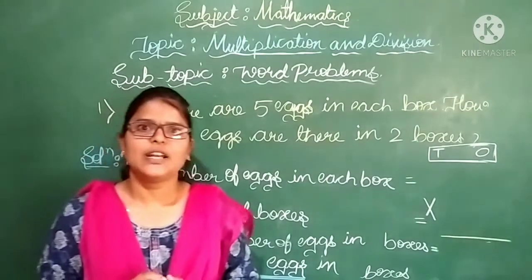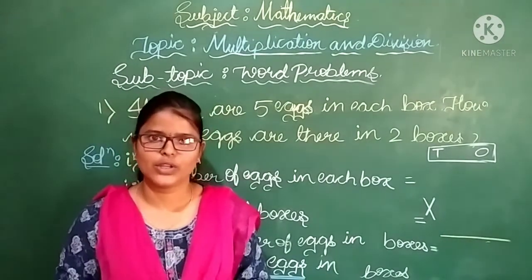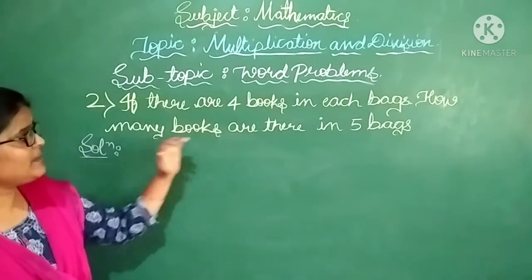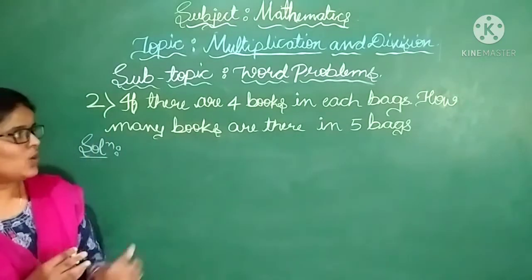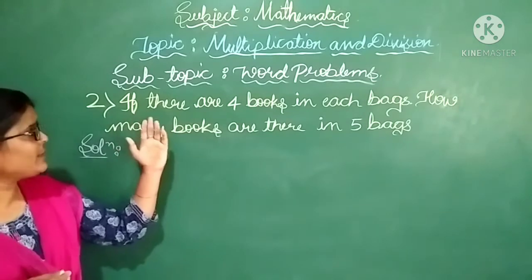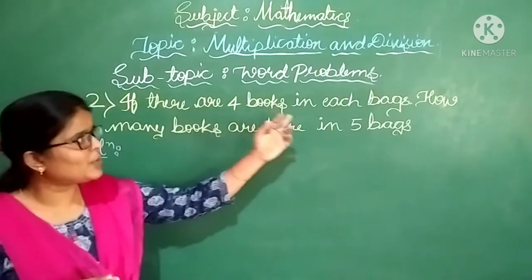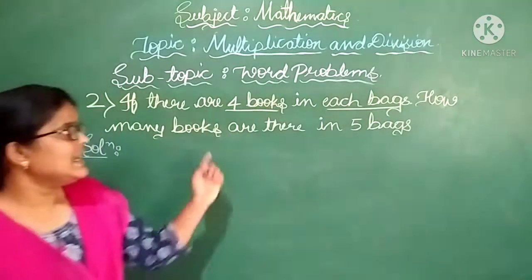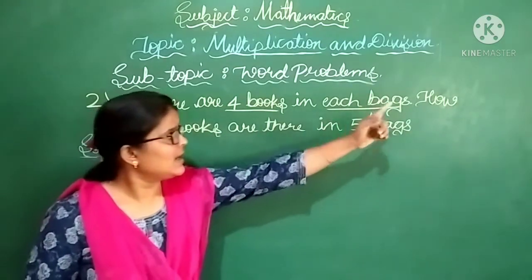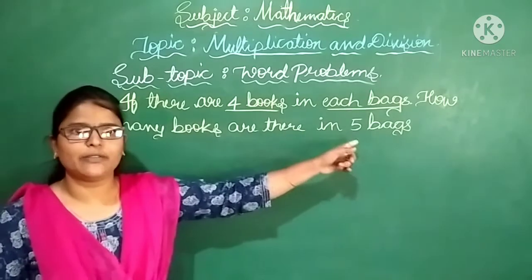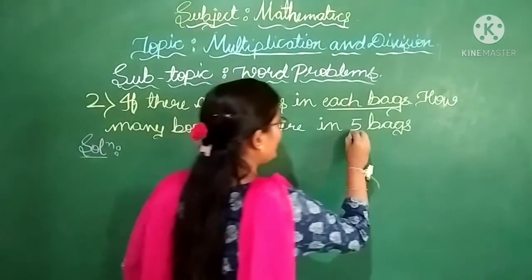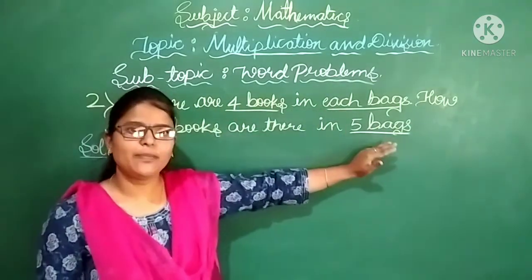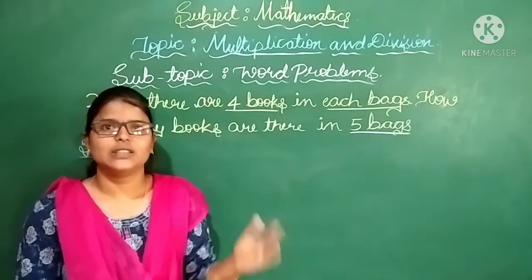Now let us move on to example number 2. If there are 4 books in each bag, how many books are there in 5 bags? Each bag has 4 books, and there are totally 5 bags — so 5 bags have how many number of books? That is our question.